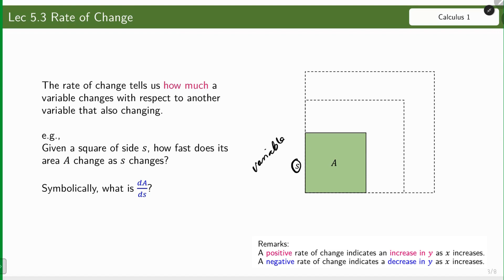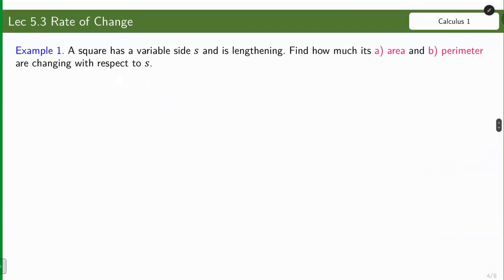When we say variable, it is changing — whether increasing or decreasing. This is not the same as constant; when we say constant, the value is fixed, but if it is a variable, its value changes. Example 1: a square has a variable side s and is lengthening. Find how much its area A and perimeter P are changing with respect to s.